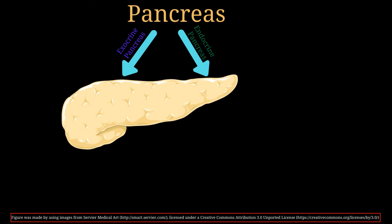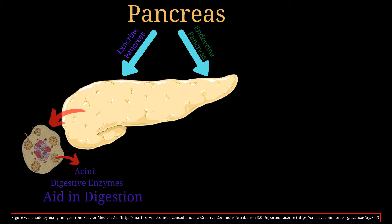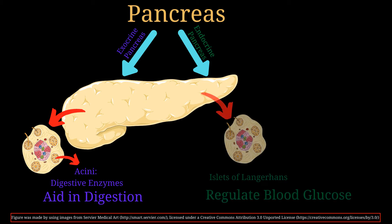The pancreas mainly has two functions: one is the exocrine pancreas and the other is the endocrine pancreas. The exocrine portion is made up of acini — cells that release digestive enzymes to help digest food. We'll cover that in more detail during gastrointestinal physiology. In this lecture we'll focus on the endocrine portion, which is responsible for regulation of blood glucose levels.